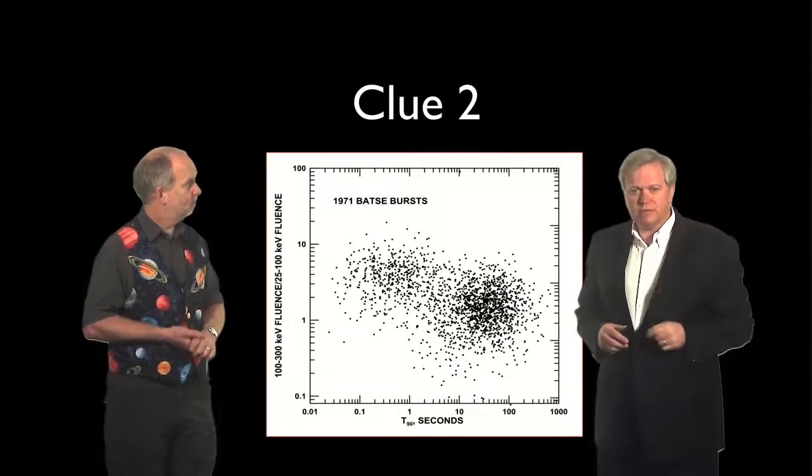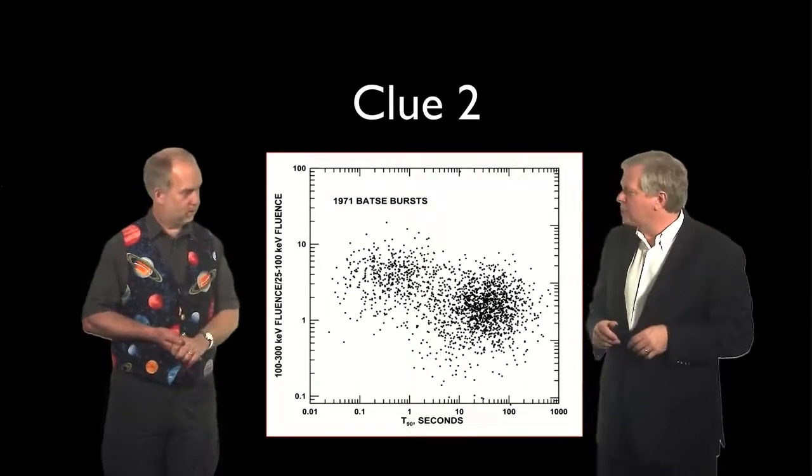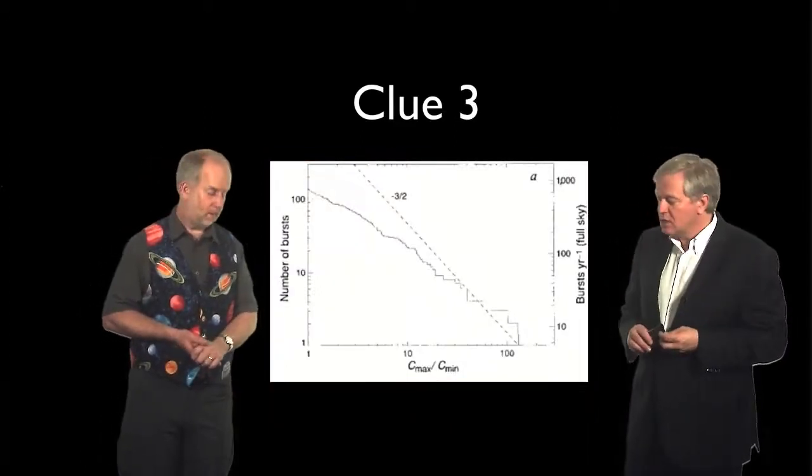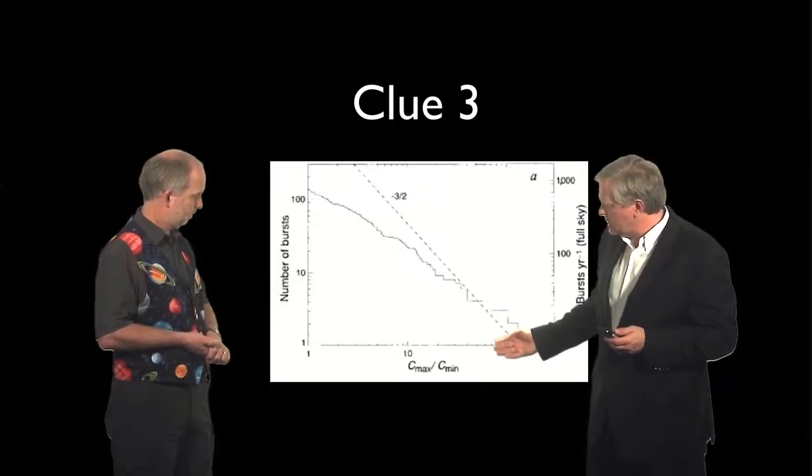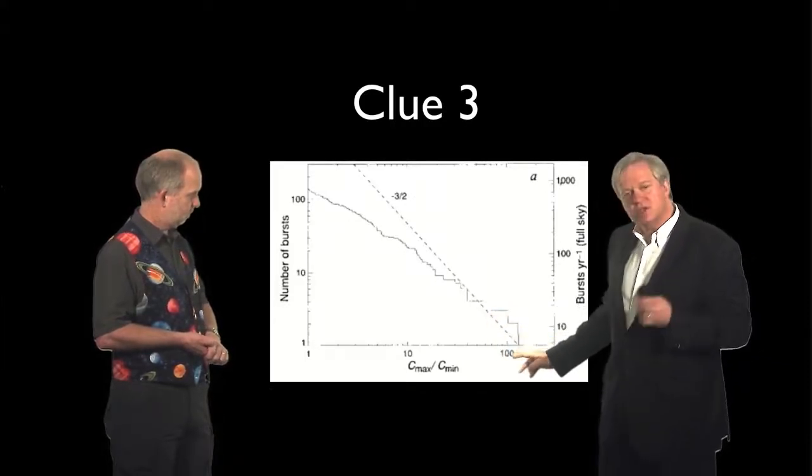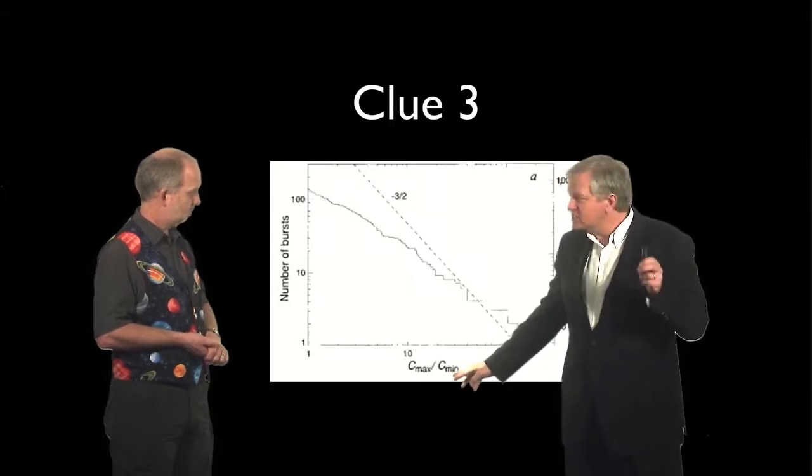So, clue three. Now, clue three is a bit more subtle. And here is a plot from one of the papers, the original paper. And this plot shows effectively how bright the object was compared to the faintest thing it could see.